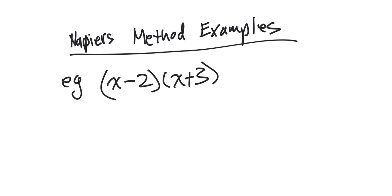Here's an example for Napier's method, that box method that I was showing.